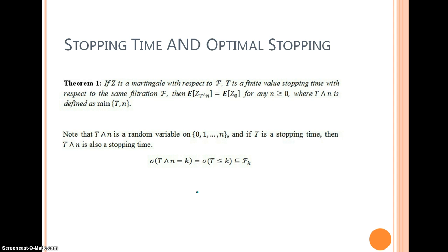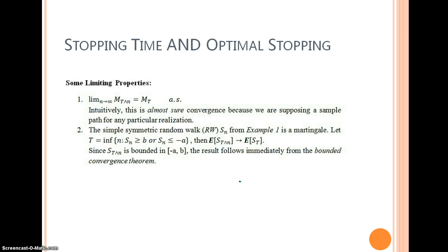The folding theorem tells basically the same story. So if z is a martingale and t is a stopping time, then this equation holds, where t wedge n is defined as the minimum of t and n. So if t and n is a random variable and t is a stopping time, then t wedge n is a stopping time as well because they have the same filtration.